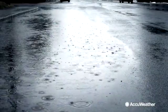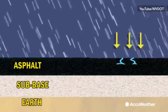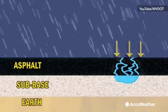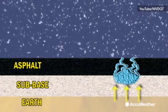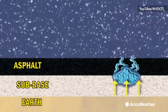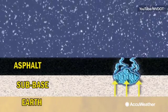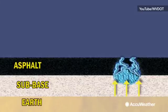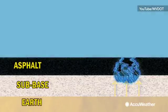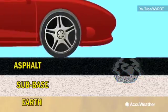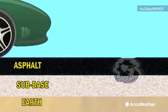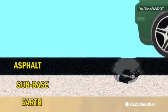Look no further than the weather. It all begins when precipitation seeps through the pavement of the road. In the winter, that water freezes and then expands, taking the pavement with it. This weakens the road even further. Once the ice melts and the water evaporates, it leaves behind a cavity. And then all it takes is enough cars driving over this spot to make it collapse into a pothole.